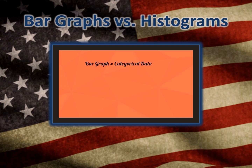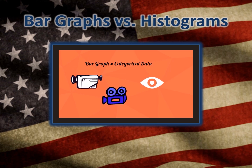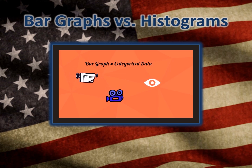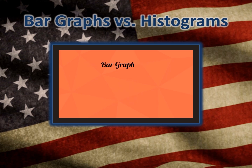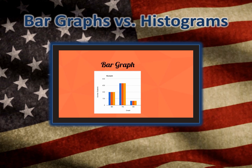A bar graph uses categories such as the types of movies or color of eyes, and the bars do not touch. For example, with this bar graph, the categories are grade level and the number of students in each grade level. Notice that the bars do not touch.